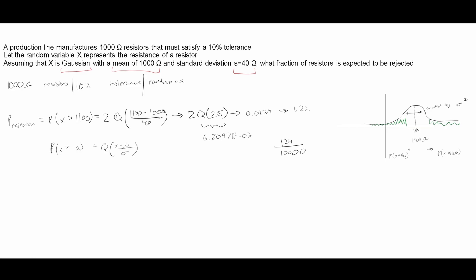So 124 over 10,000 is our fraction notation. It says what fraction of resistors is expected to be rejected. So this is the probability of rejection. And that's how we would look at this problem.